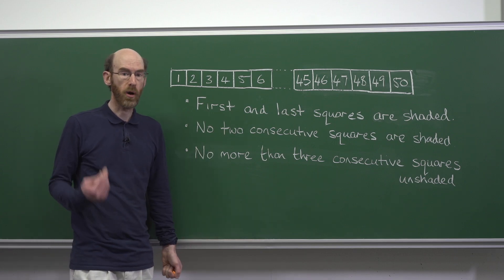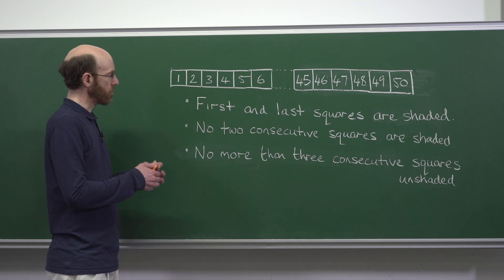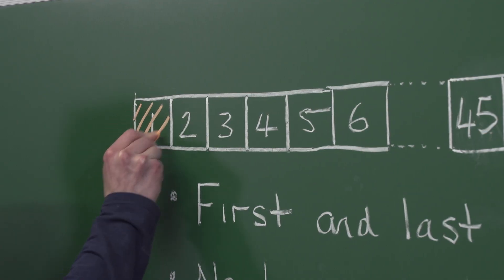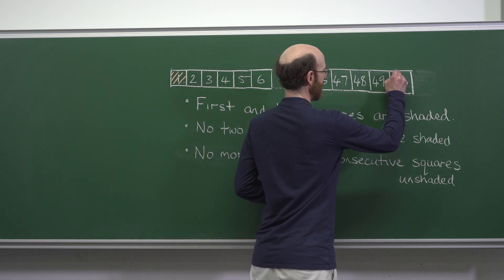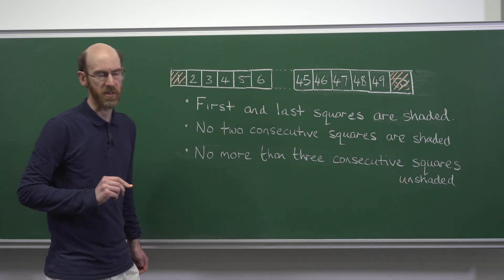So what is the most number of squares we can shade here? Well, we get two for three, one and 50 must be shaded.